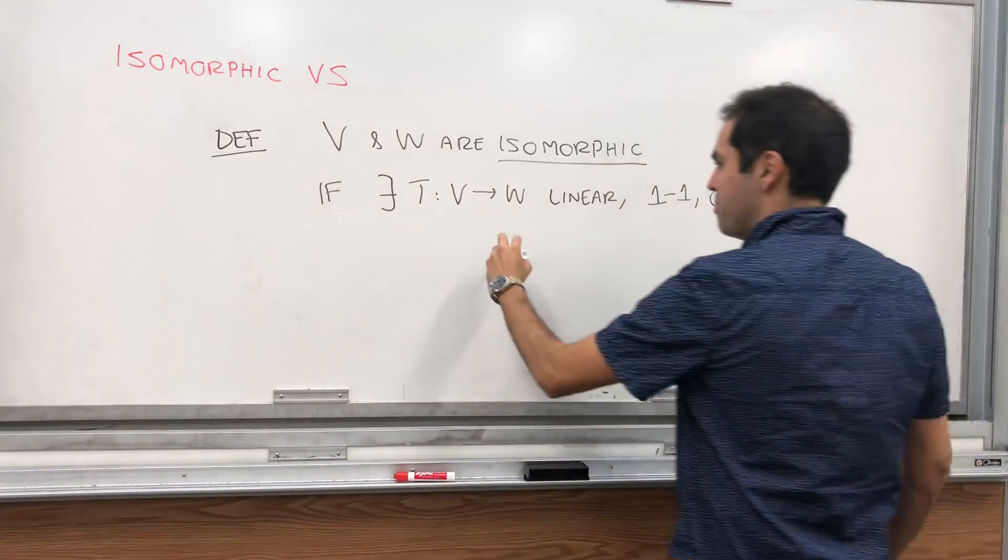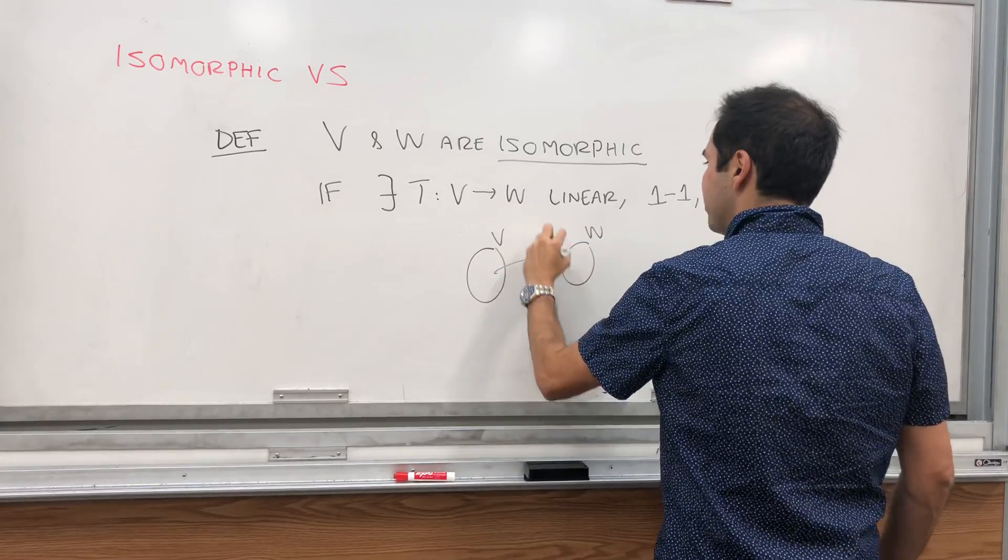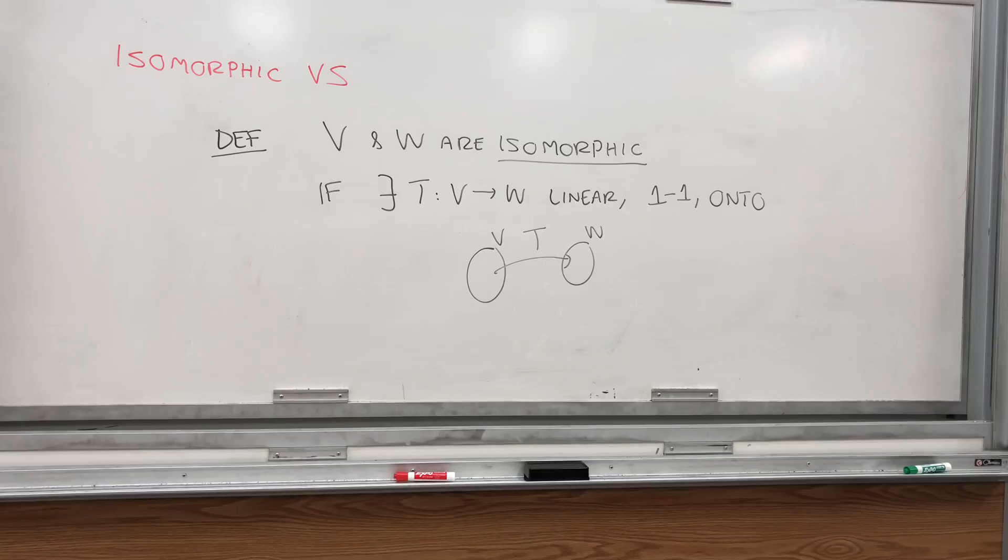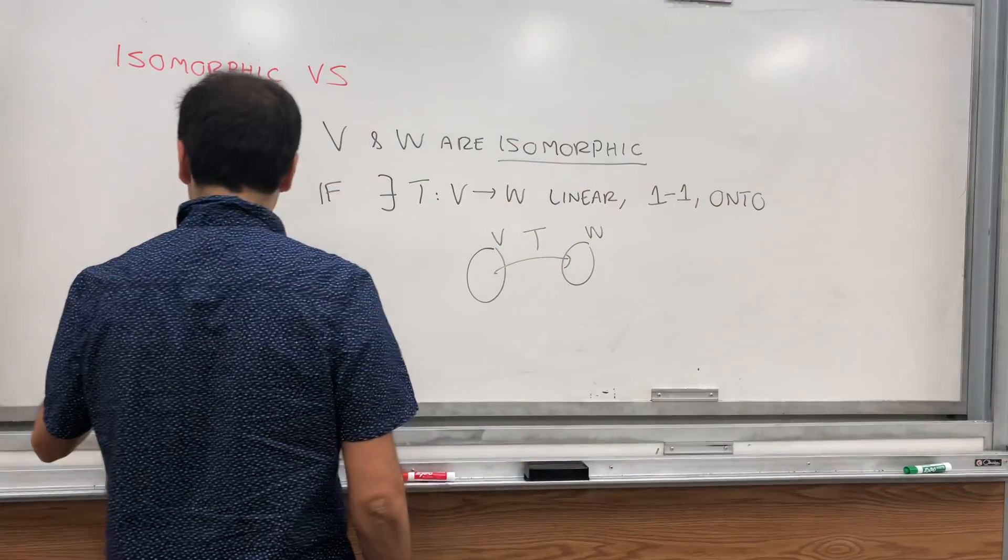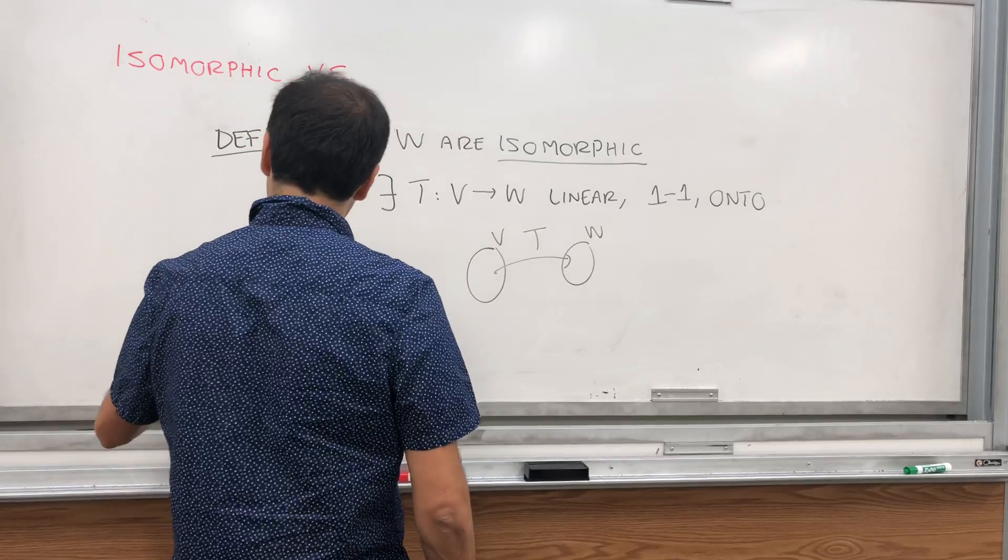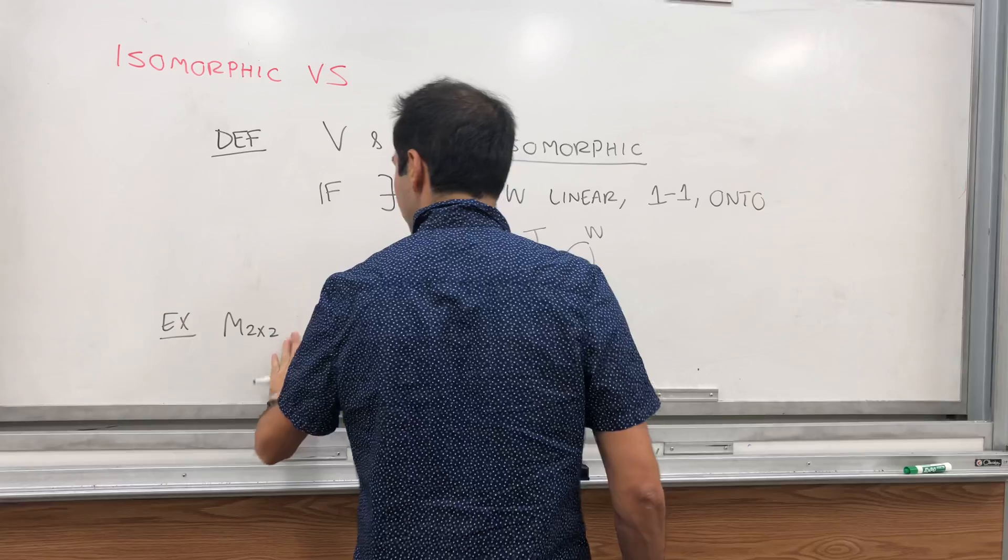So again, just a picture, we have V and W, and there's a linear transformation T from V to W. For example, this space, let's say, of two by two matrices and R4 are isomorphic.